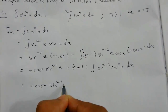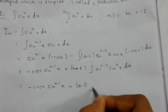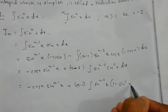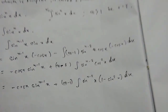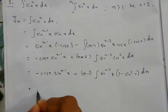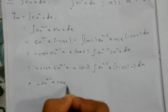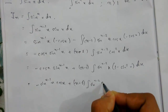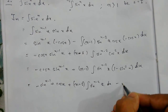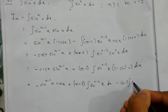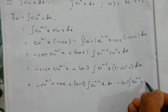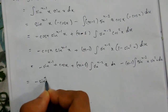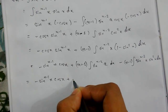We express cos²(x) as 1 - sin²(x) to simplify. This gives us -sin^(n-1)(x)cos(x) plus (n-1) times the integral of sin^(n-2)(x) dx, minus (n-1) times the integral of sin^n(x) dx.